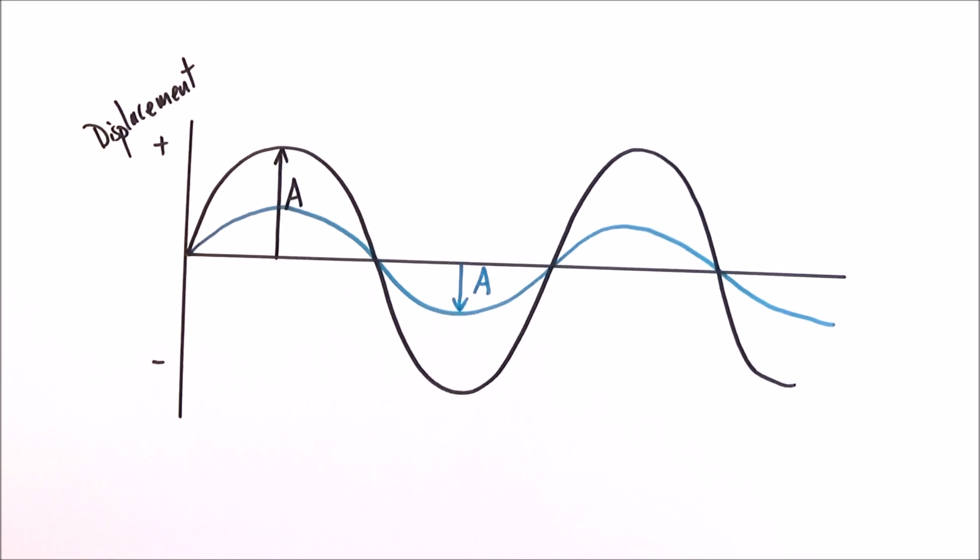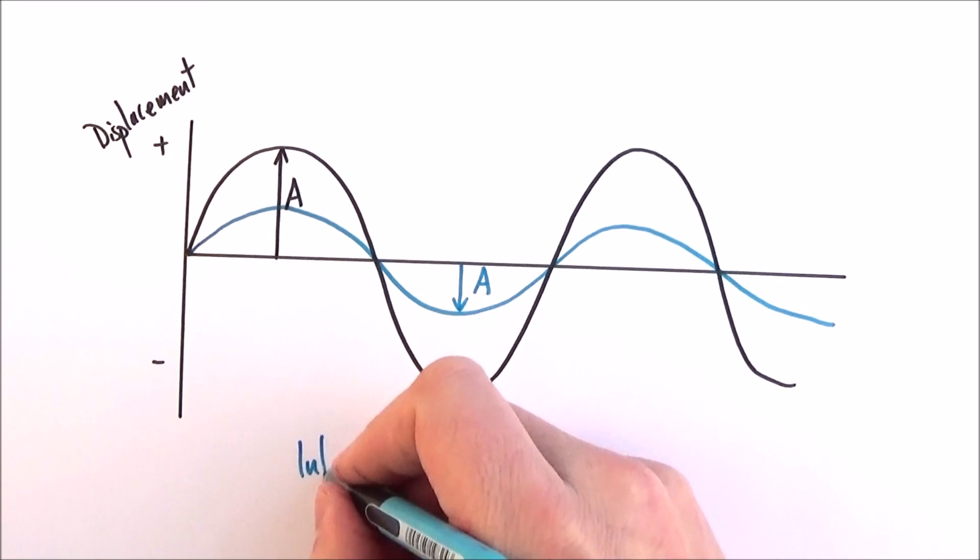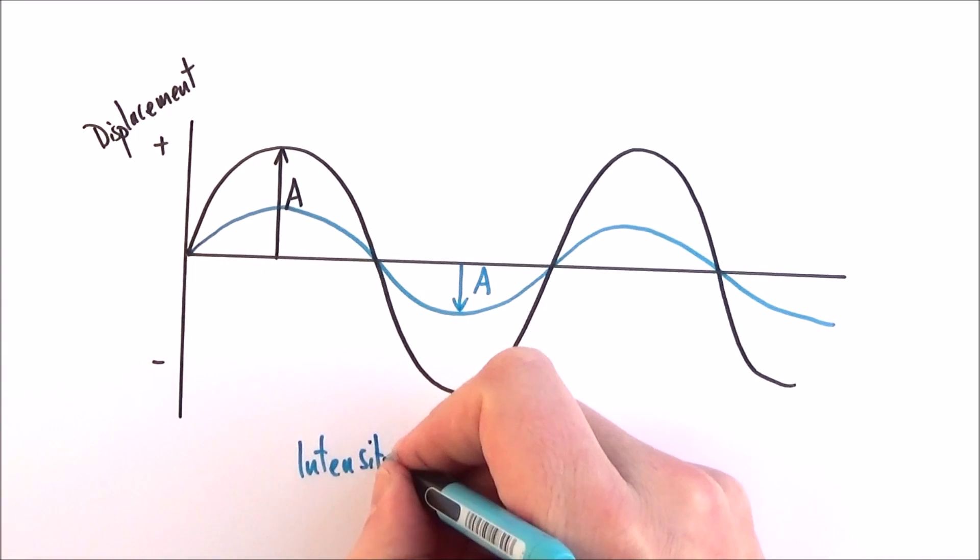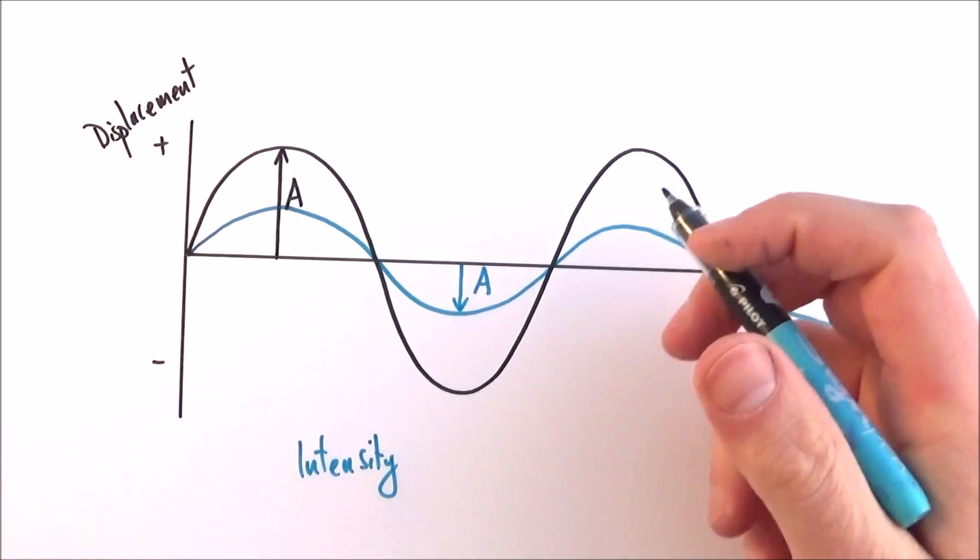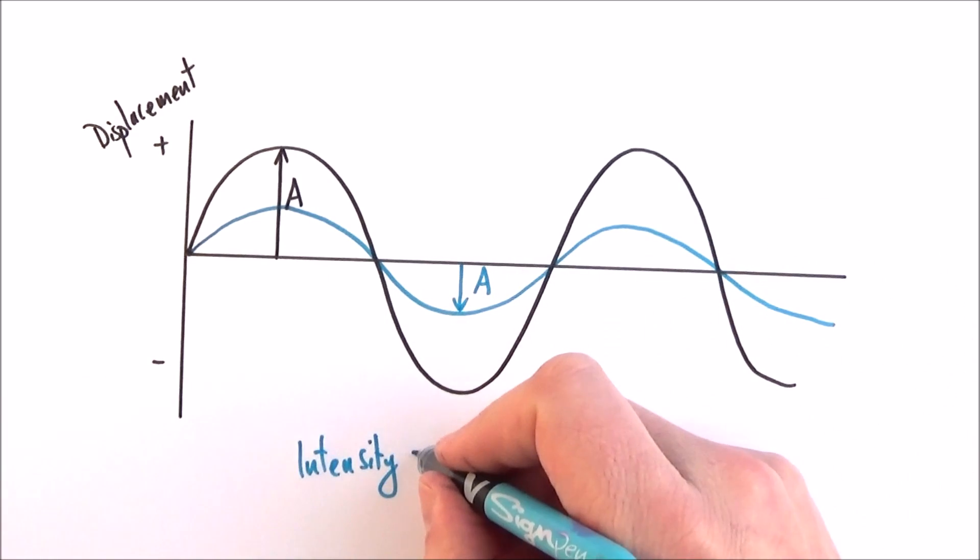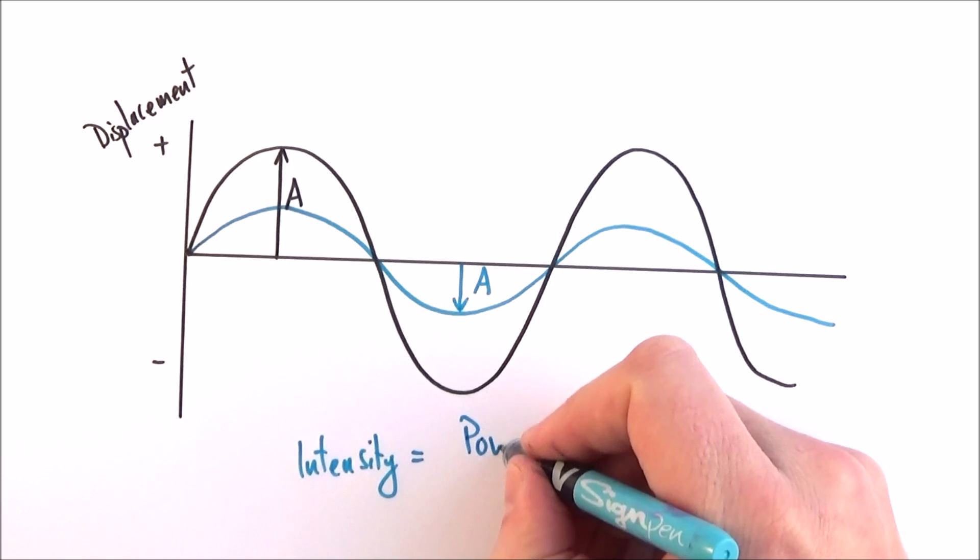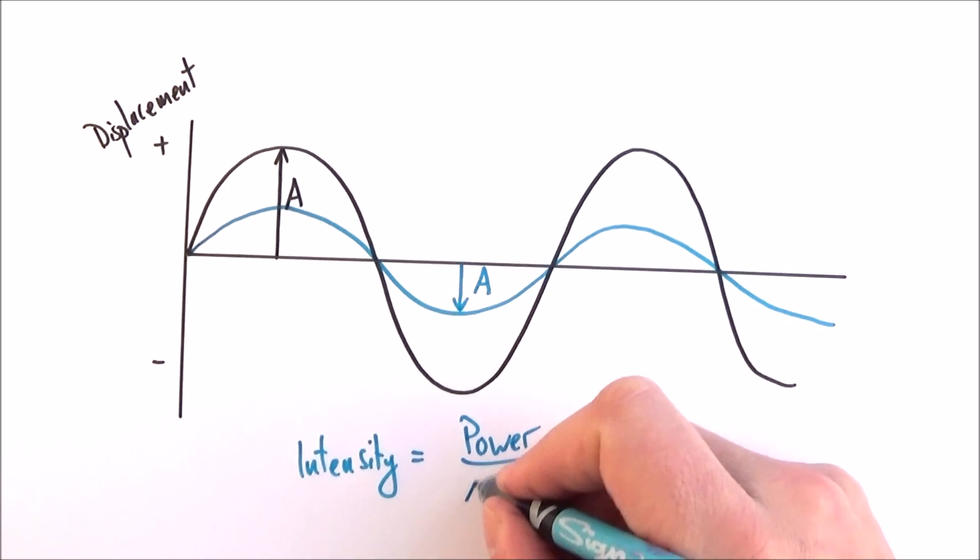Now, the intensity of an object is a measure of the amount of energy per second per square meter, so the intensity is equal to power over the cross-sectional area.